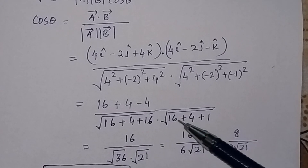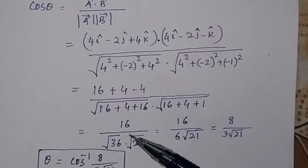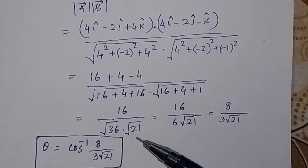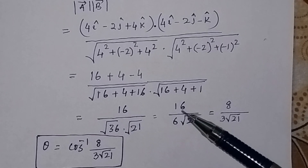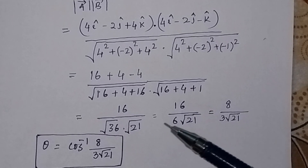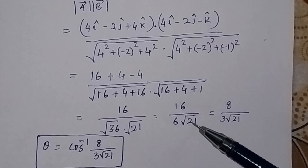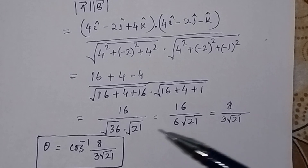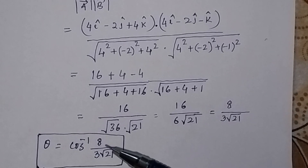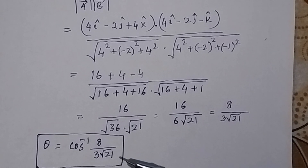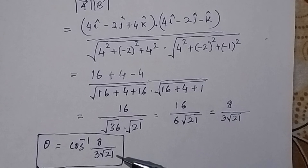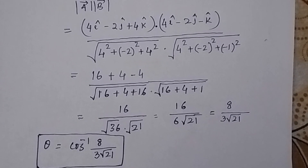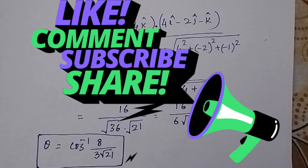Simplifying: 16 / (6 · √21) = 8 / (3√21). Therefore, θ = cos⁻¹(8 / (3√21)). In this way, you can find the angle between two surfaces at a given point.